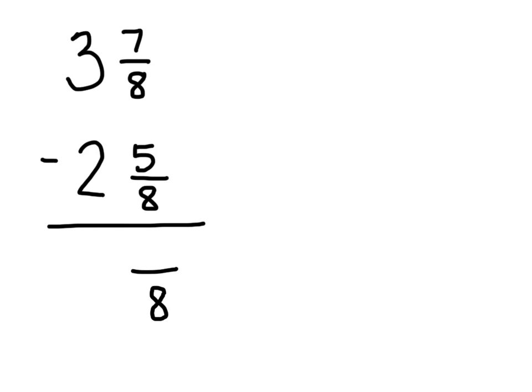In this case 7 eighths minus 5 eighths brings me to 2 eighths, and then with my whole numbers I have 3 minus 2 which is 1.